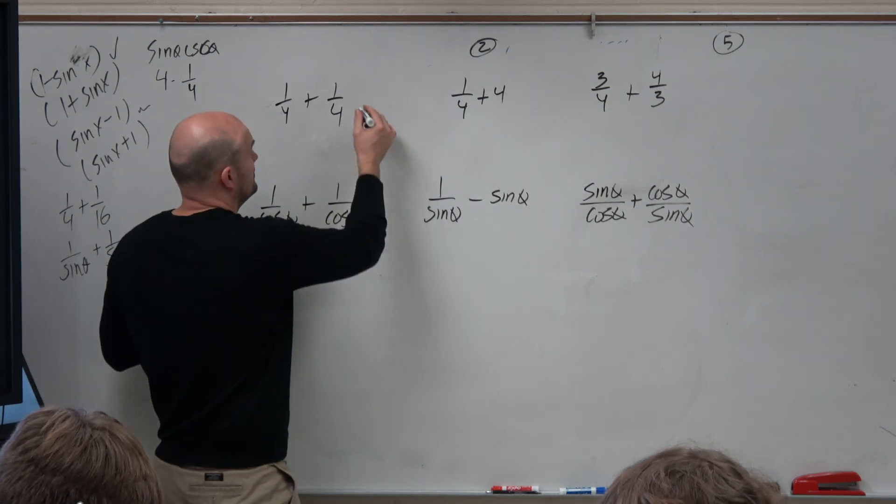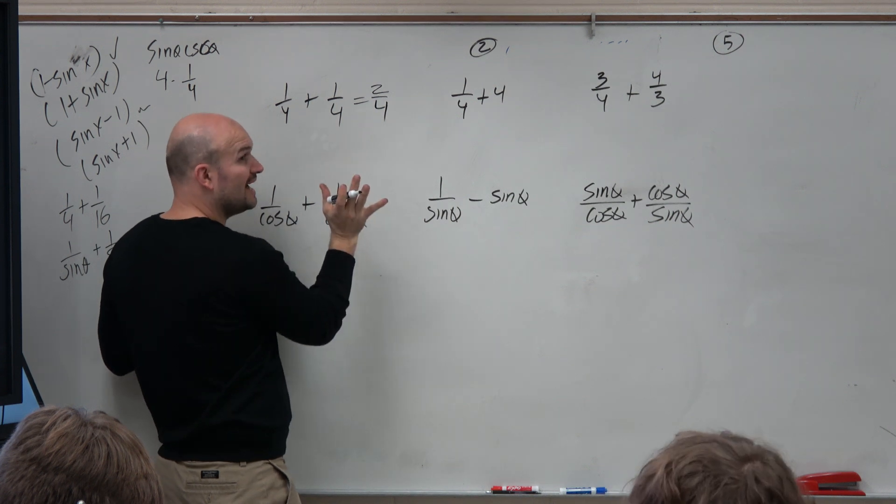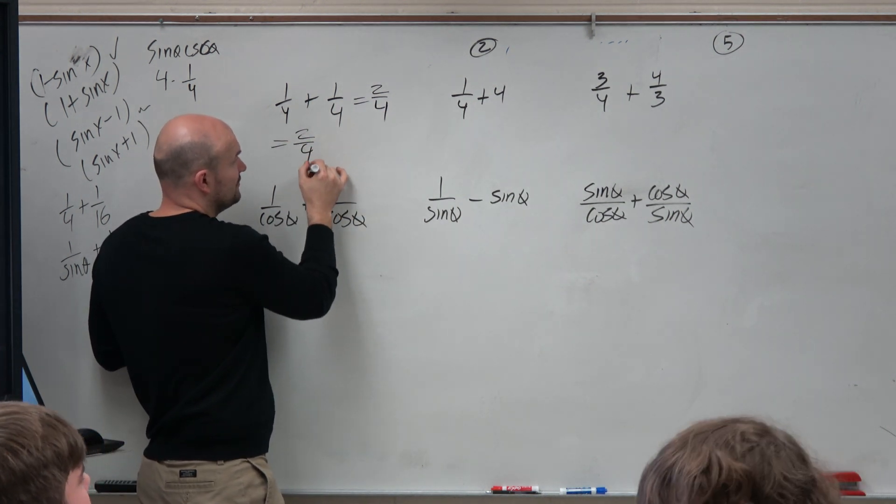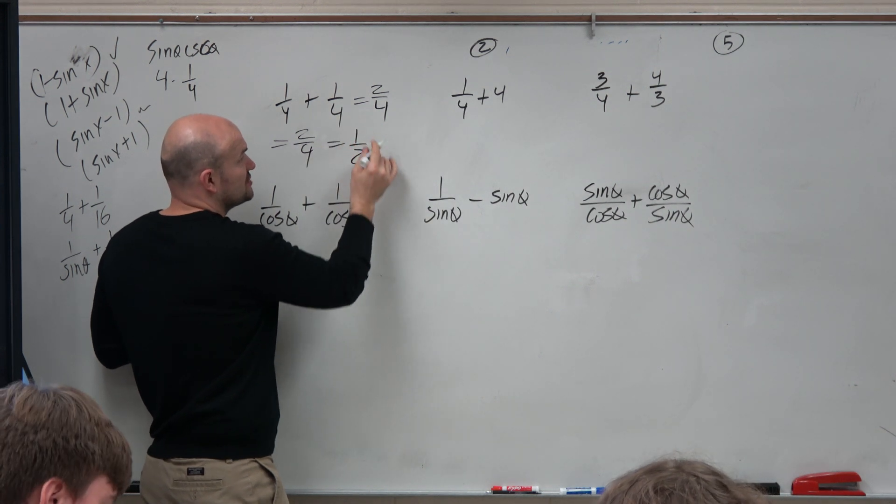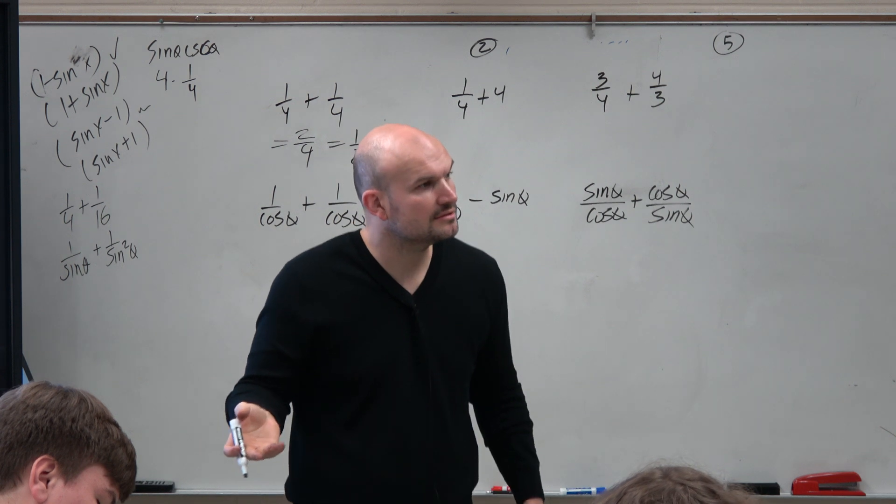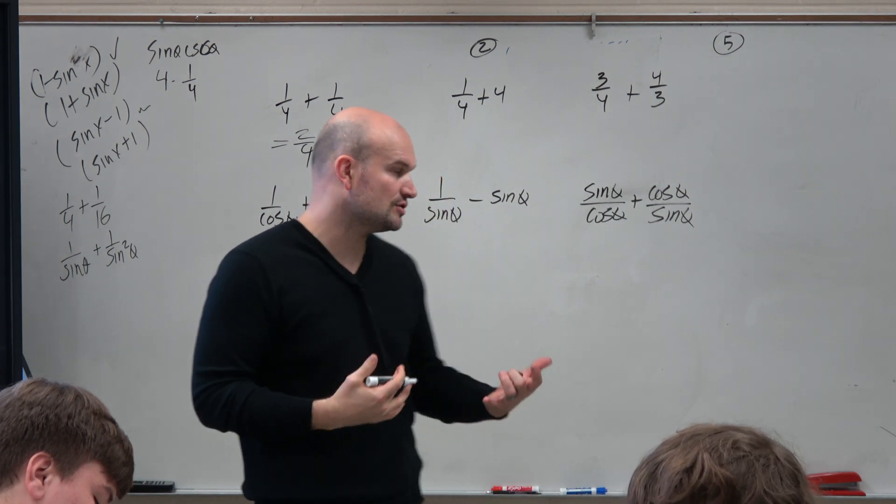you just add numerators, keep the denominator the same. 1 fourth plus 1 fourth is just 2 fourths. But remember, we can always simplify this, right? So you get 2 fourths, and you can simplify that to 1 half. So just because you apply the operation, look to always simplify. And that's kind of like our goal here.